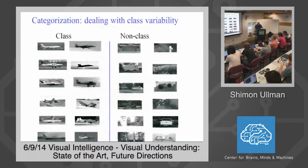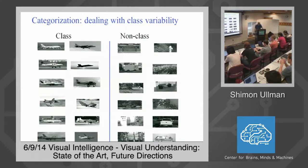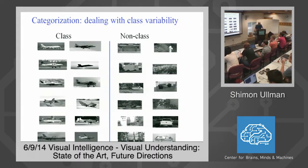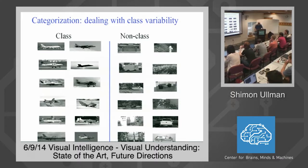A major part of the problem is not just producing something that works, but there is a learning issue. We don't want to program each and every class by hand. What we would like to do is mimic what people can do — we show the system images and they learn to recognize them. A typical setup is that you give a vision system training images, typically labeled as belonging to a class and not. From then on, the learning system should discover all the differences between class and non-class images and produce a classifier ready to look at new images and produce labels.